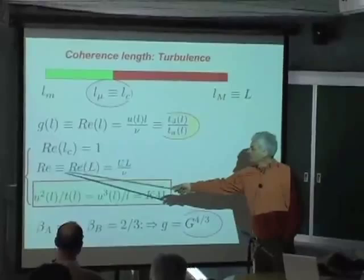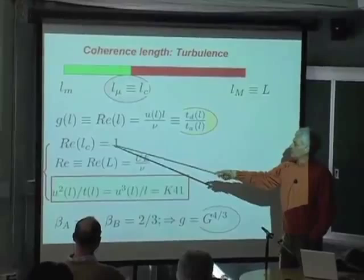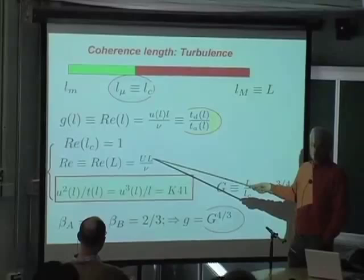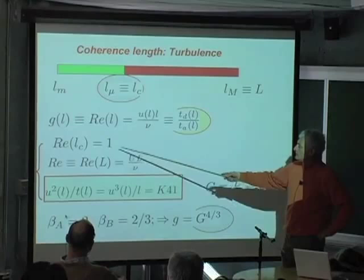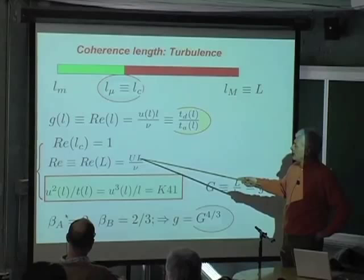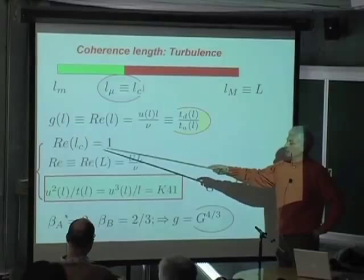The question was: if I have this definition, and you tell me that Reynolds of L_critical is 1, these two are sufficient to pin down the coherence length. Actually, this is not true for the simple reason that U at scale L_C is, at this point, unknown. So I cannot just place L equal to L_C and set it equal to 1 and get the value of L_C, because U will be U at scale L_C, which I don't know.